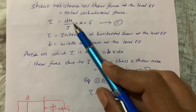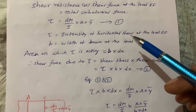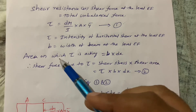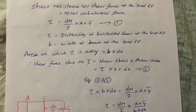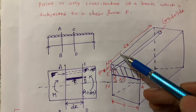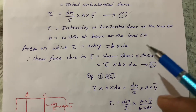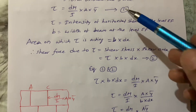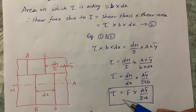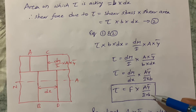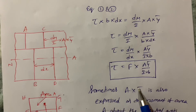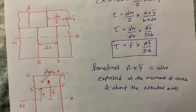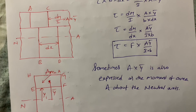Shear resistance: tau equals DM by I into A into Y bar. Tau is the intensity of horizontal shear, and B is the width of the beam at level EF. The area on which tau is acting is B into DX. Shear force due to tau equals shear stress into shear area. Equating the two expressions, I get tau equal to F into A into Y bar by I into B. Sometimes A into Y bar is also known as the moment of area about the neutral axis. This is the final expression for shear stresses in beams. Thank you so much.